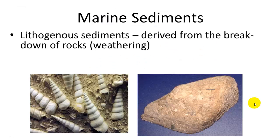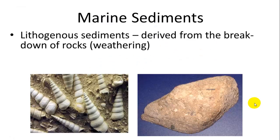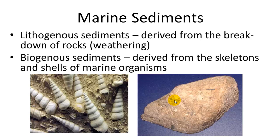Marine sediments are compositions of rock or sand. Lithogenous sediments are derived from the breakdown of rocks through weathering — such as waves splashing against the margin. Biogenous sediments are accumulations of shells from invertebrates, which can form structures like limestone over millions of years. Volcanic activity can also form new rock that is subsequently weathered into sediments.